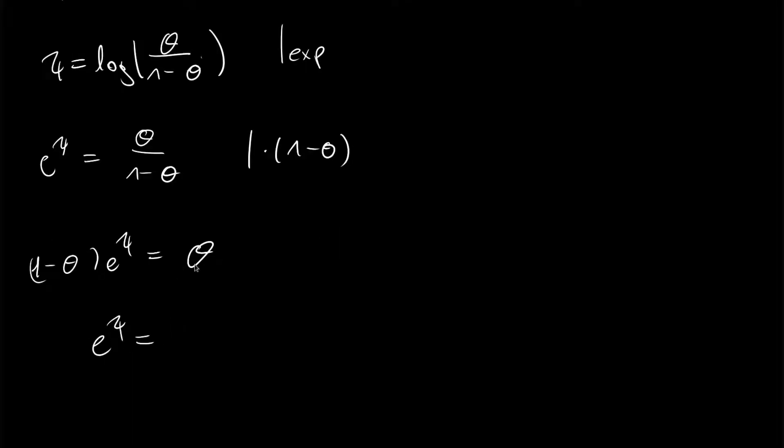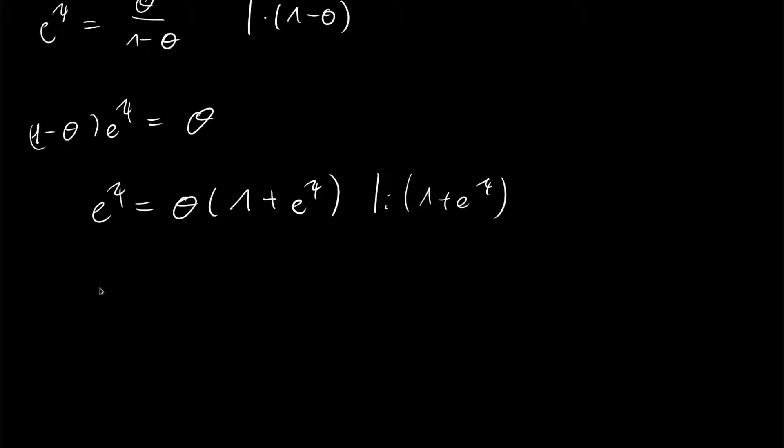e to the psi equals theta times 1 plus e to the psi. Then we can divide by this term, so divide by 1 plus e to the psi, and we get theta equals e to the psi over 1 plus e to the psi.